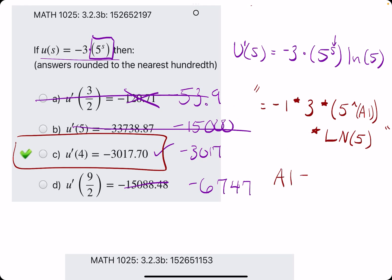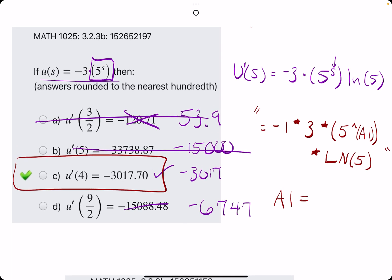So then in A1, you could type in 3 over 2, and then get that answer in B1 cell, and then type in 5, and then get that answer in B1 cell, and so on, and do it the same way as we did in Desmos.